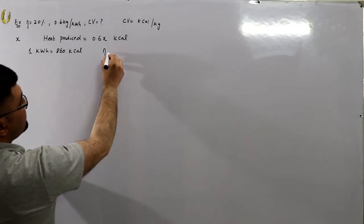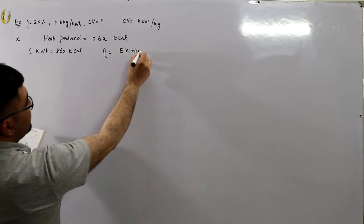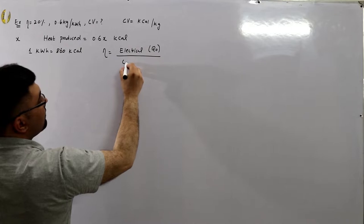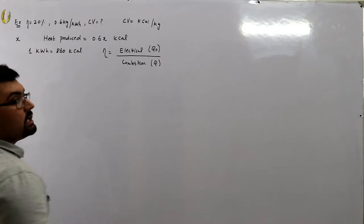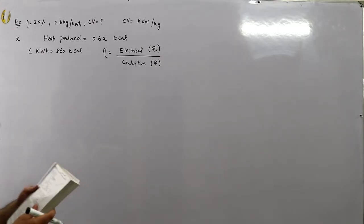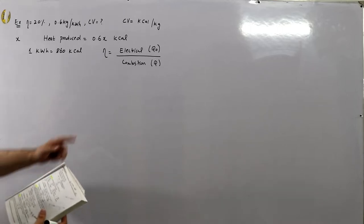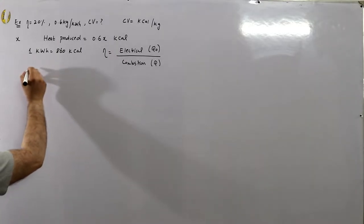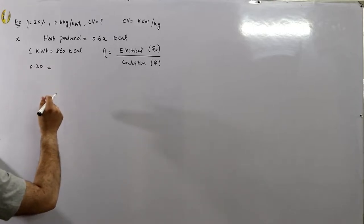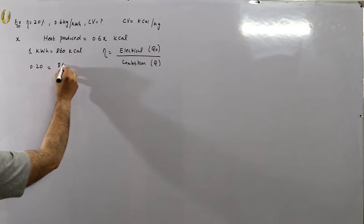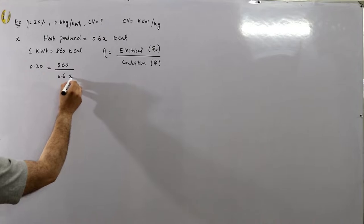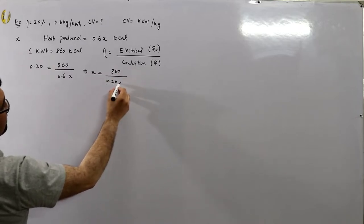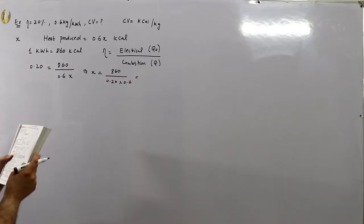The overall efficiency is the electrical output in heat units divided by the heat of coal combustion. So eta = Q_out / Q_in. Here eta is 0.20, the electrical equivalent is 860 for 1 kWh, and Q_in is 0.6X. Therefore X = 860 / (0.20 × 0.6), and the calorific value comes out to be approximately 7166 kilocalories per kilogram.